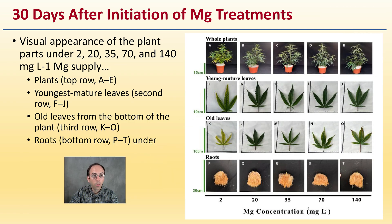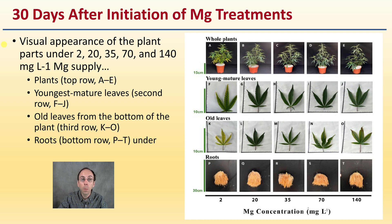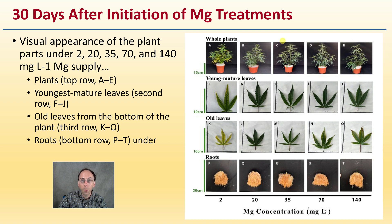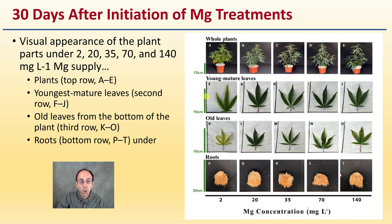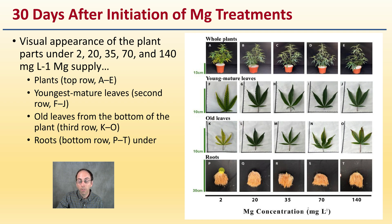Looking at the study here, 30 days after the initiation of the magnesium treatment, the visual appearance of the plants under 2, 20, 35, 40, and 140 milligrams per liter of magnesium supply. The very top shows the plants from a zoomed-out macroscopic view, with magnesium concentration increasing from left to right. The second row shows the youngest mature leaves, and the third row shows the older leaves from the bottom of the plant — and we can definitely see those older leaves showing deficiency in the very low treatment.